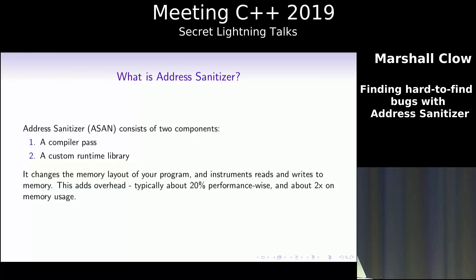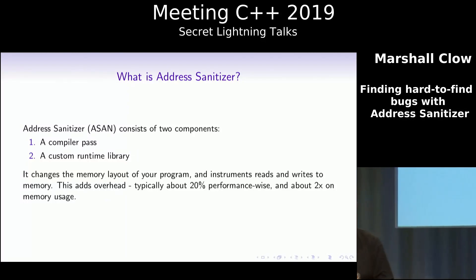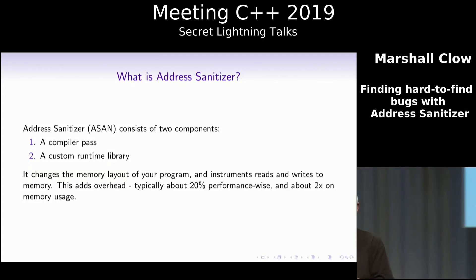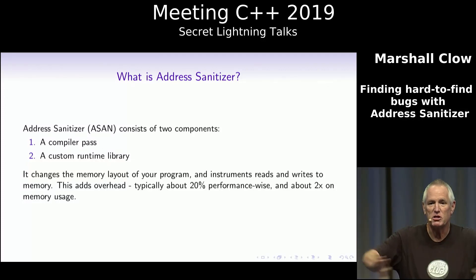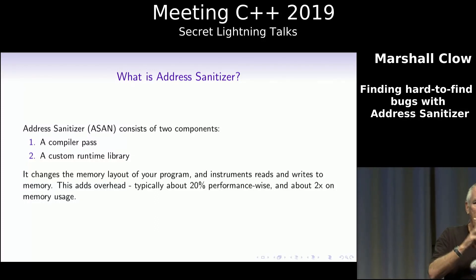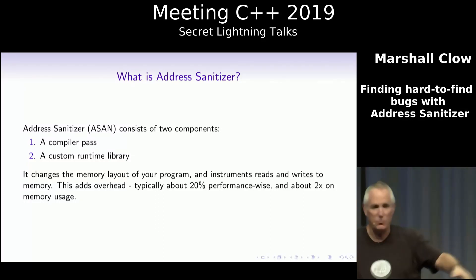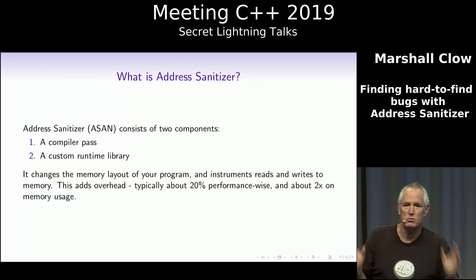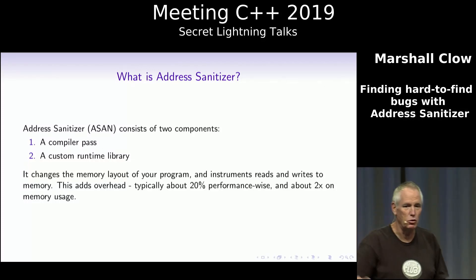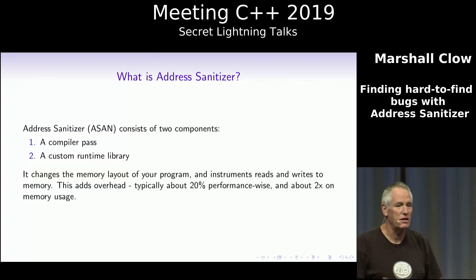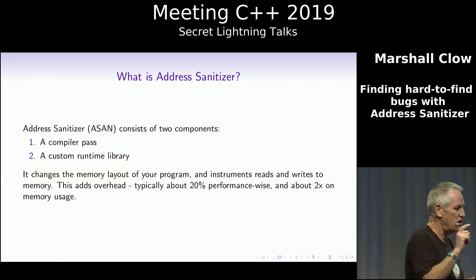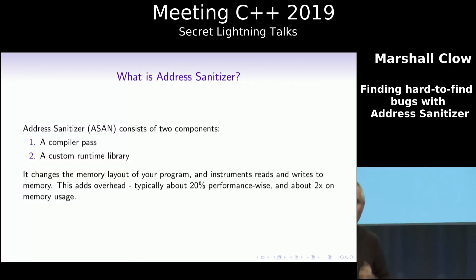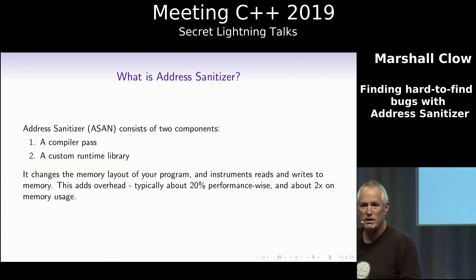But how does it work? Address Sanitizer is a compiler pass and a customized runtime library. You build your program with Address Sanitizer enabled and it changes the memory layout of your program. It instruments your program so that every read and write to memory is checked to make sure it goes where it's supposed to and does not go to some random place. This changes the memory layout and it adds some overhead — about 20% performance overhead.